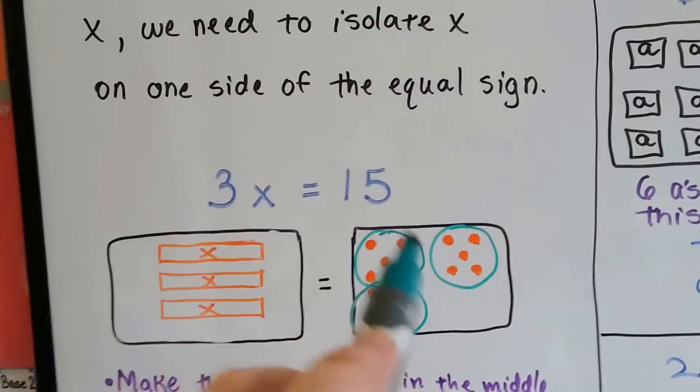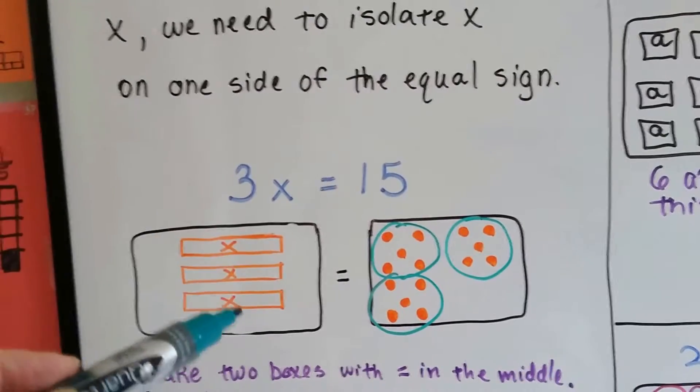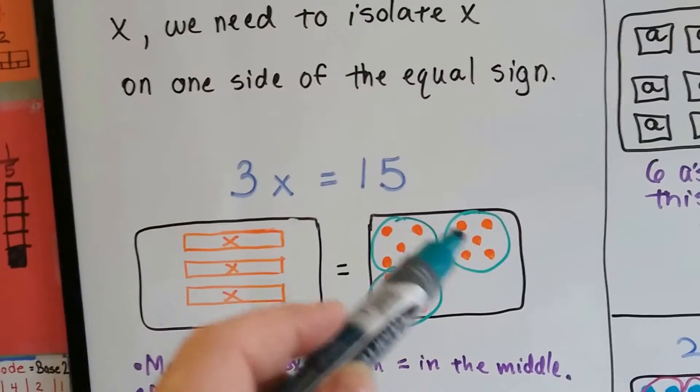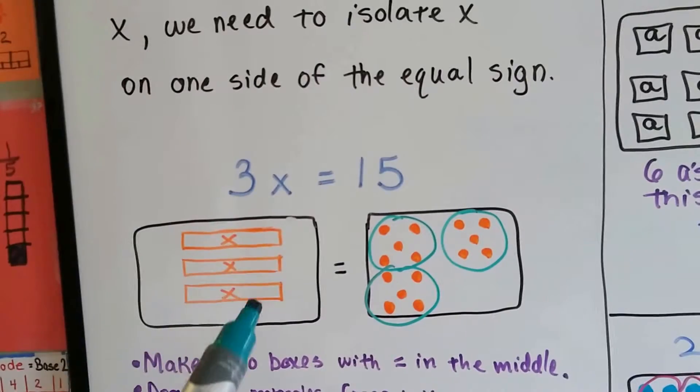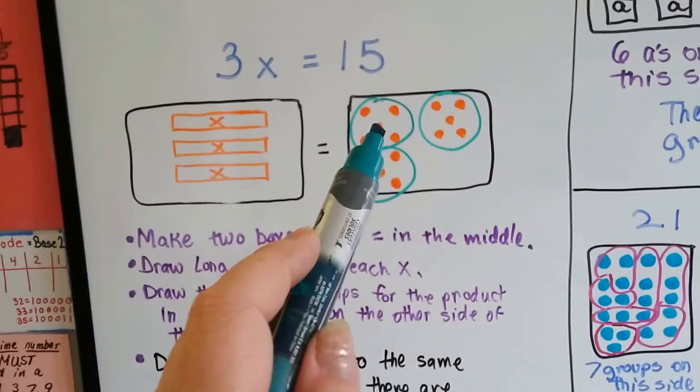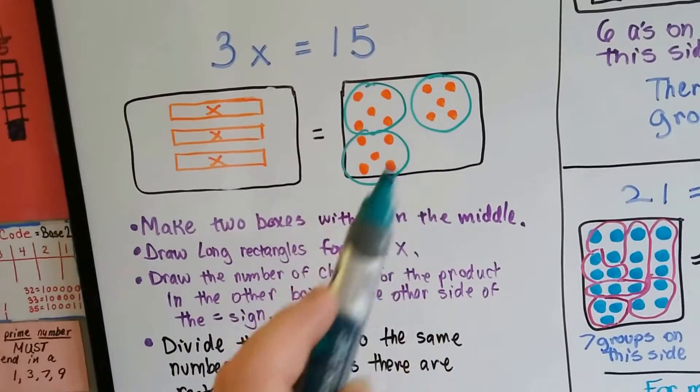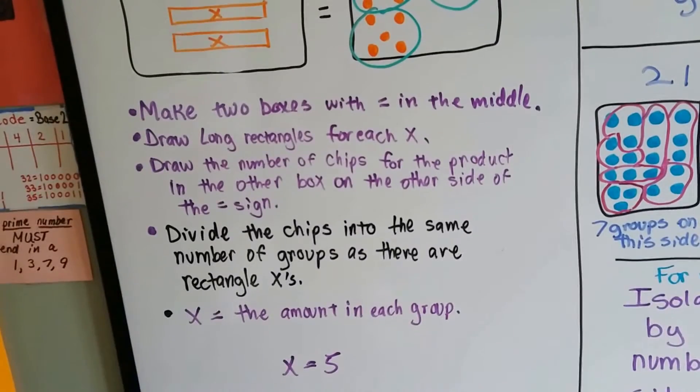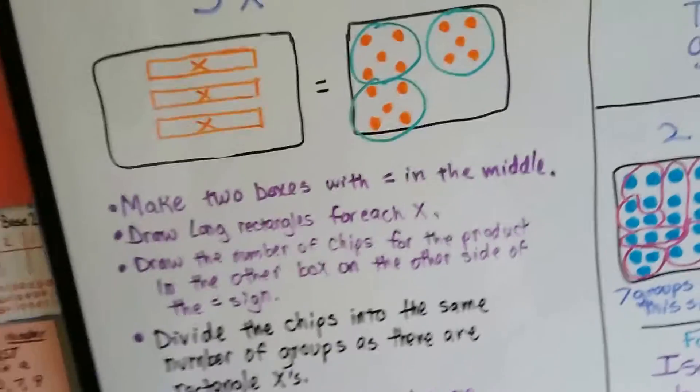3x equals 15. We draw two black boxes. We know we have three x's, so we make three boxes to represent the three x's. We draw our 15 dots or chips, and then however many boxes of x there are, that's how many groups we make. Whatever number is inside the group, that's what 1x equals. Because there's three groups, there's three x's, there must be five in each of these x's. x equals 5. Isn't that easy?